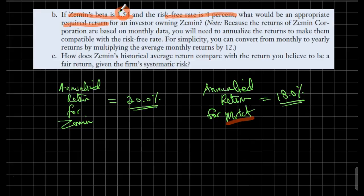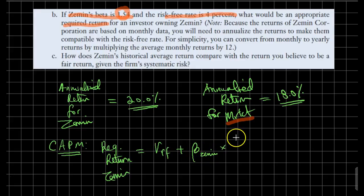Going back to our problem, we will be making use of the Capital Asset Pricing Model to calculate the required return. The required return for our company, Zemin, would be equal to the risk-free return plus the beta of our security times the market risk premium. Let me write it in the long form: it would be the return of the market minus risk-free.